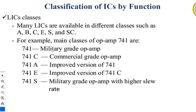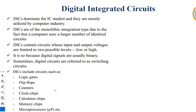Some of the main classes of the op-amp 741 are: 741 is used for military grade op-amp; 741C for commercial grade op-amp; 741A is an improved version of the basic 741; 741E is an improved version of 741C; and 741S is for military applications.